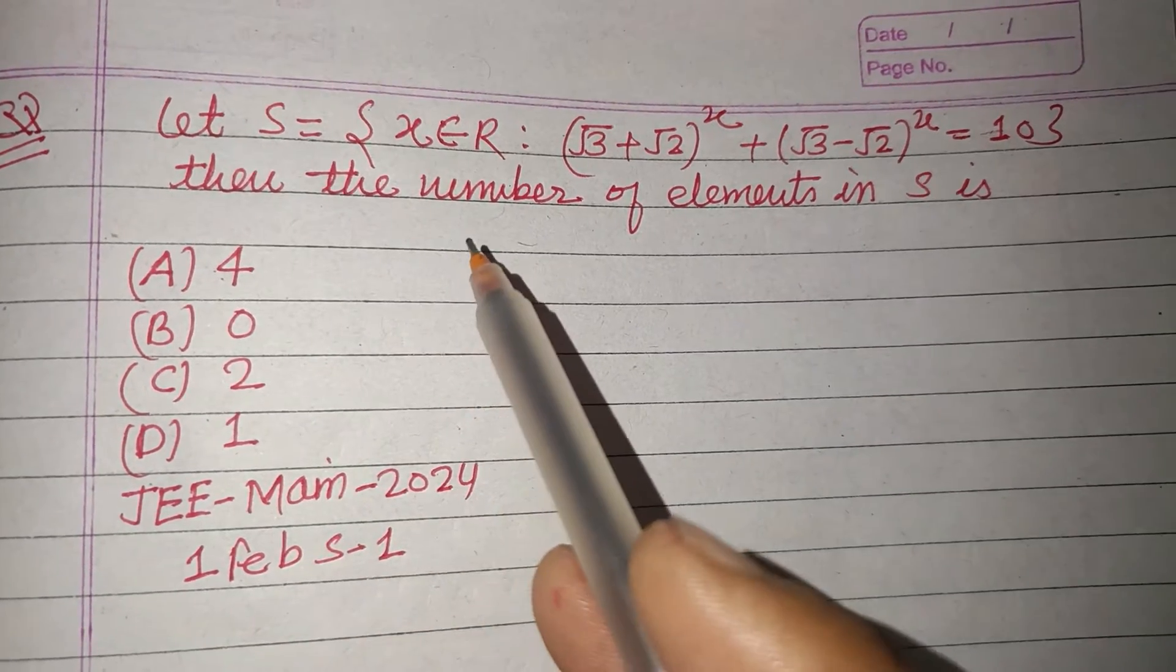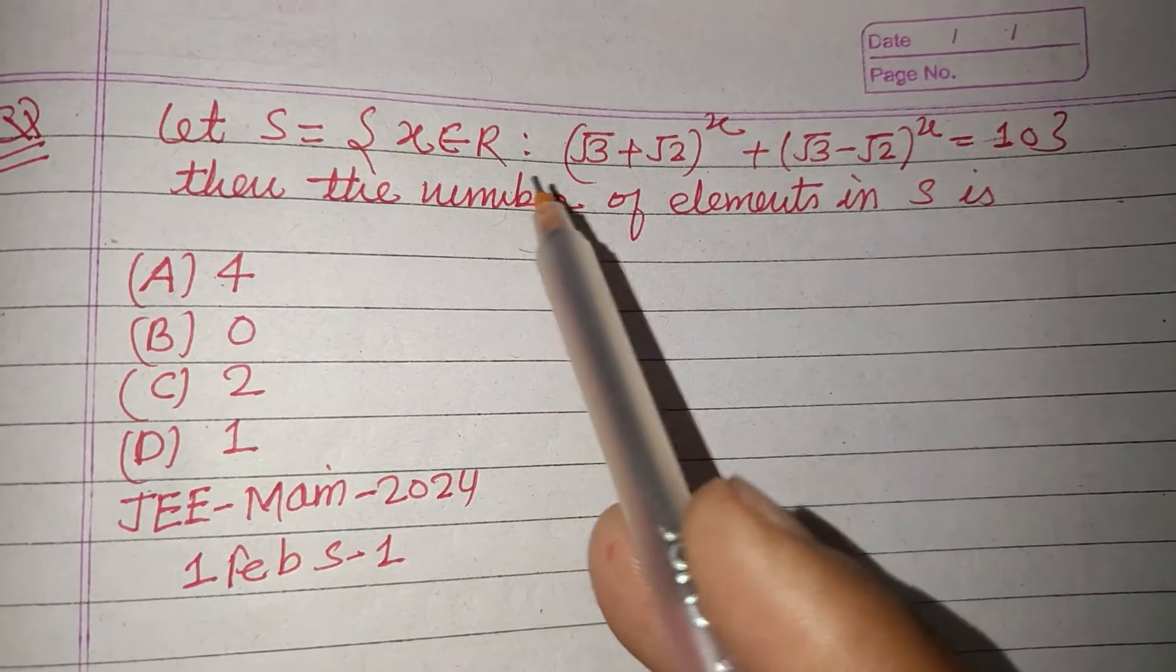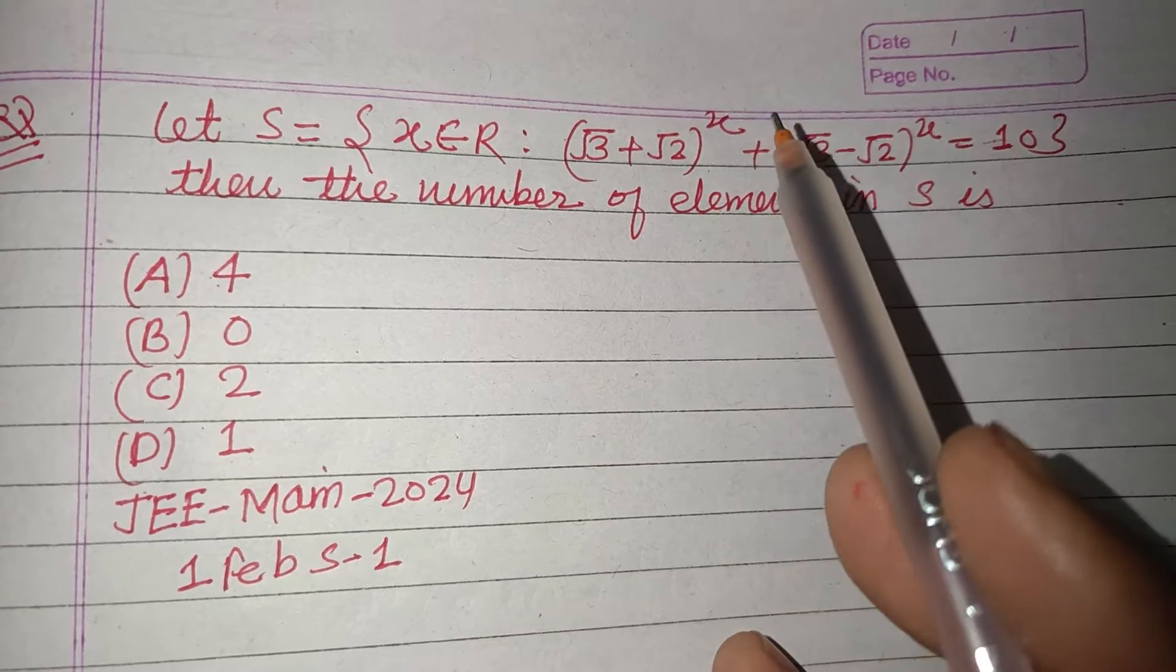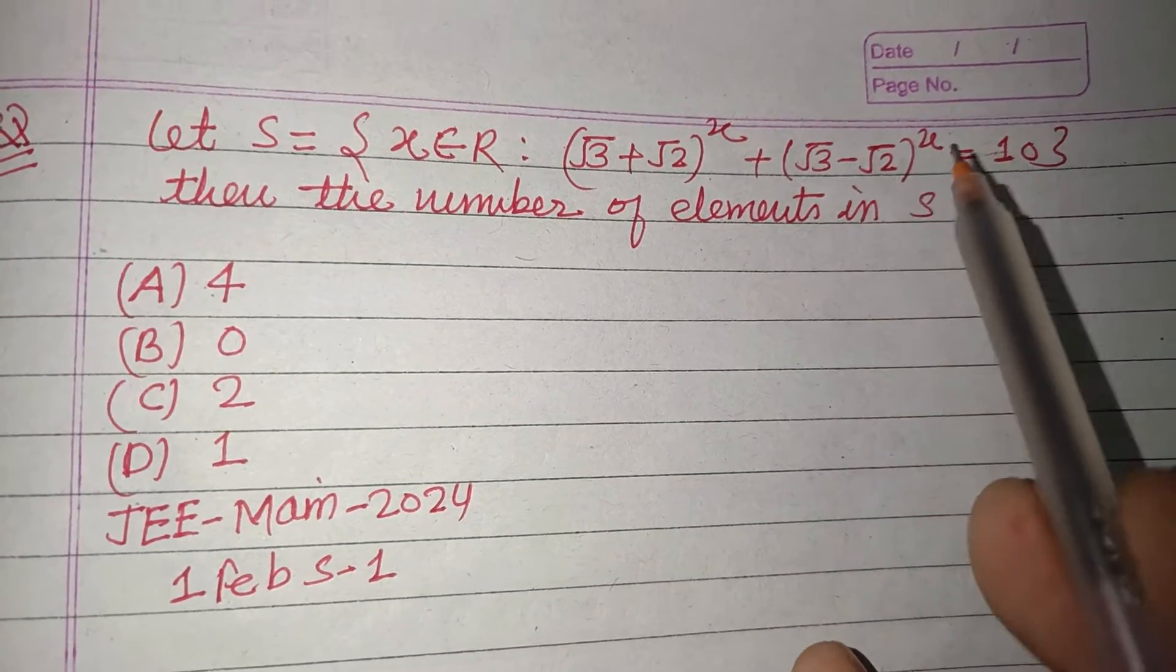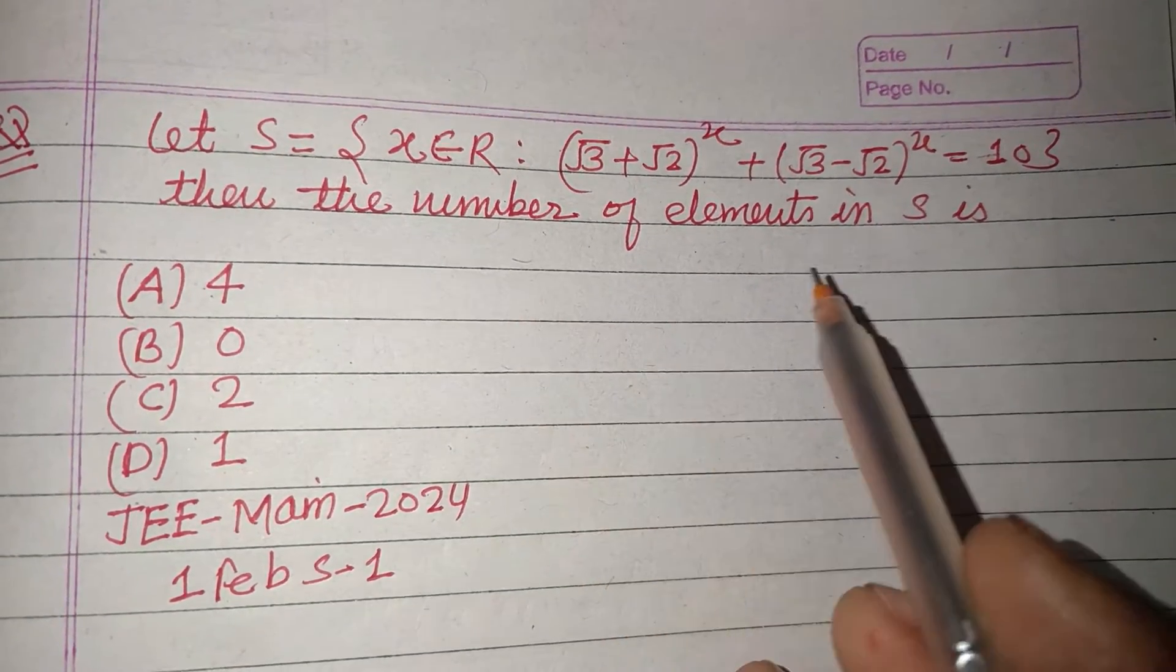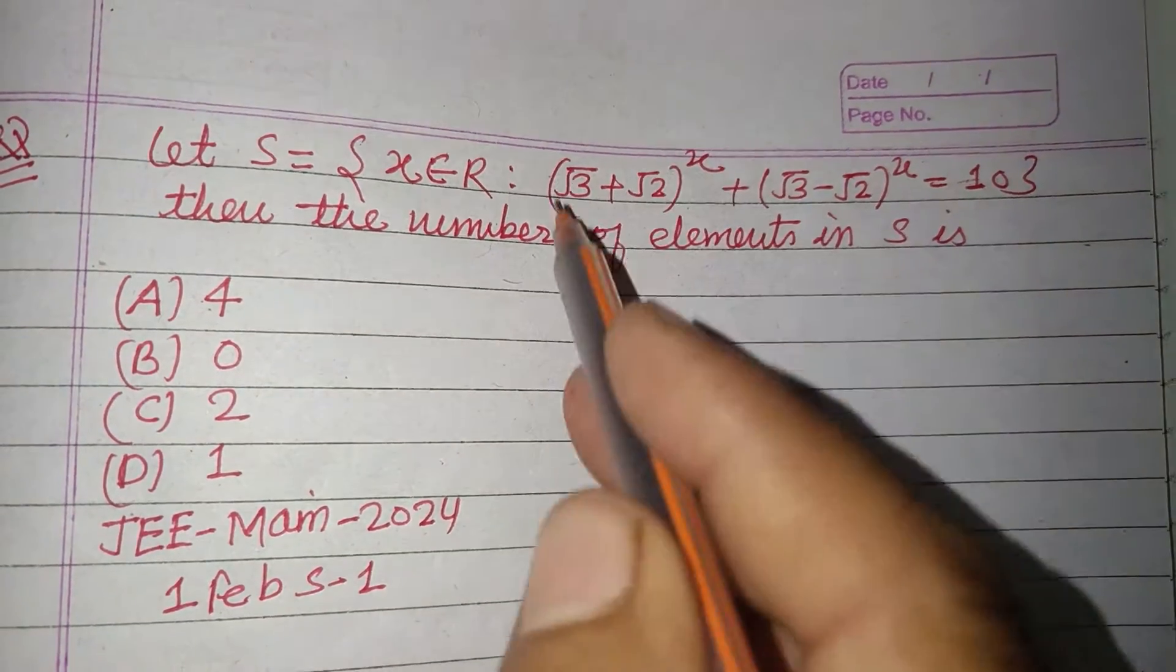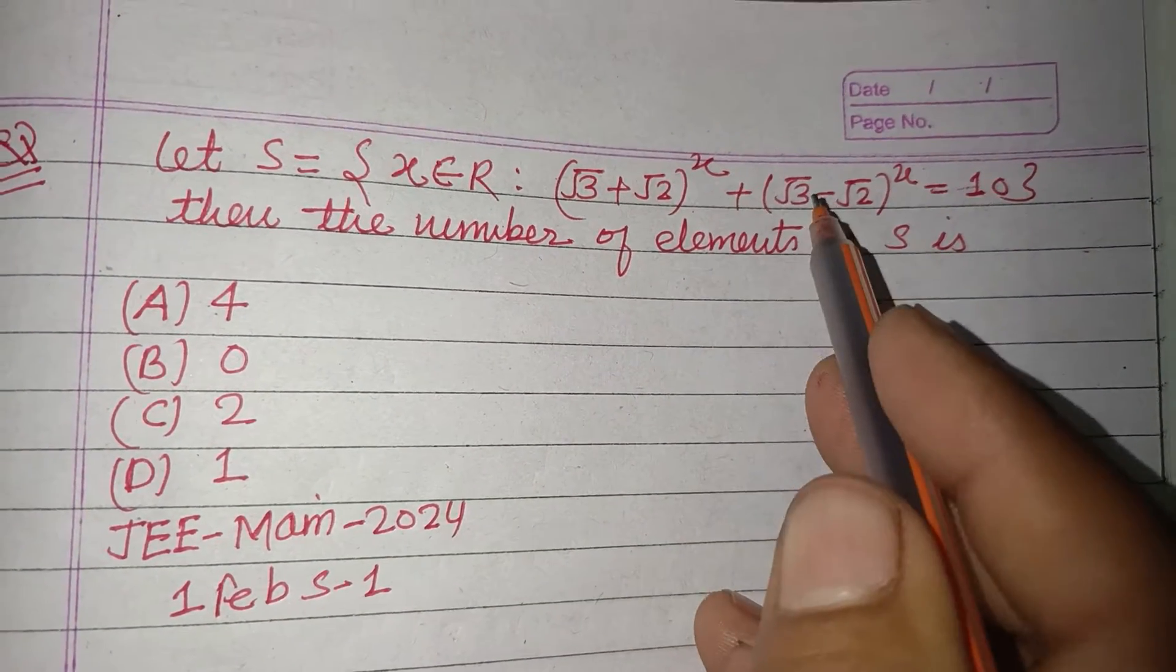Let S equal to x belongs to R, where (√3 + √2)^x + (√3 - √2)^x = 10, and find the number of elements in S. We want to find out the number of solutions of this equation.